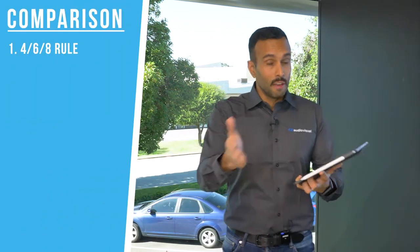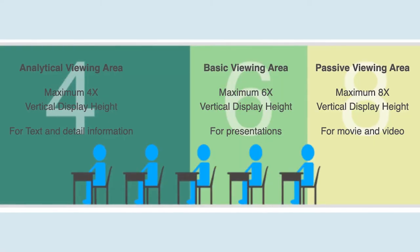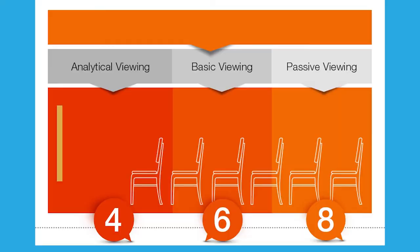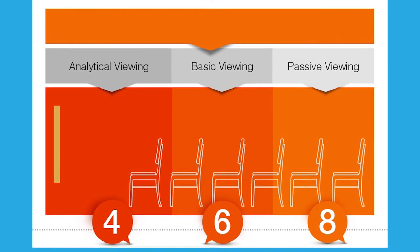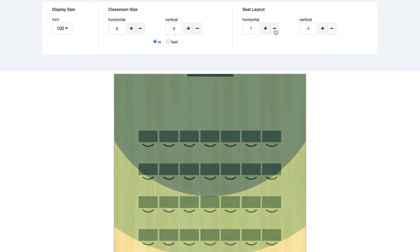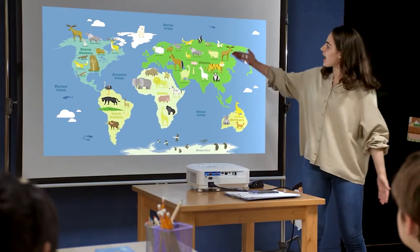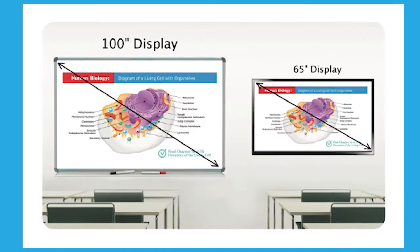It's called the 4-6-8 rule. This rule makes it easy for anyone to figure out how big a display or projector screen you need for your classroom. Depending on how high your image is, you multiply by 4 if you're doing something analytical, by 6 if you're doing a basic presentation with big images, and by 8 if it's passive like a video that doesn't need intricate information to be seen. When you multiply, the answer you get is how far someone should be seated from that display.